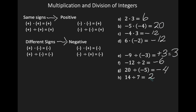Multiplication and division of integers is pretty simple because they share the same rules. If the signs are the same, your result will be positive whether you're multiplying or dividing. When you have different signs, your result is negative whether you're multiplying or dividing. Good luck on your TASC examination.